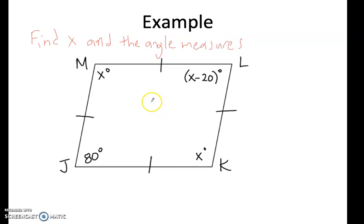What I would do here is add X plus X plus X minus 20 plus 80 plus X equals 360.